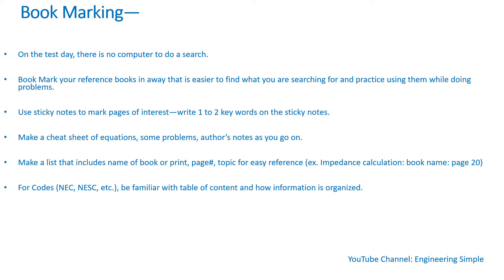For code books like the NEC and NESC, be familiar with the table of contents and how information is organized. You obviously can't read the entire NEC — it's over a thousand pages — and there's no way to remember everything. But make sure you know how information is organized, for instance where to find cable resistance tables, and make note of certain pages like motor calculation tables for cables and resistance.